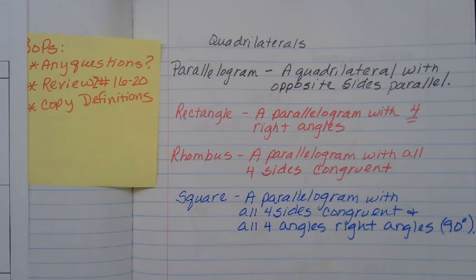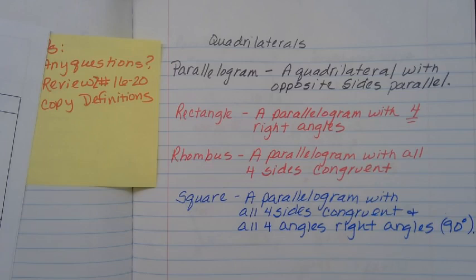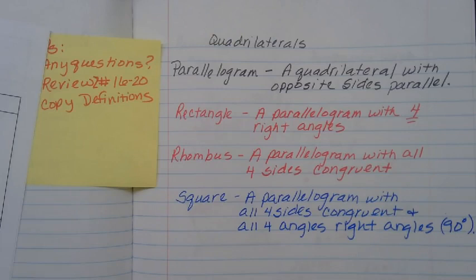And their definitions are all based on the fact that they are a parallelogram. So a rectangle is a parallelogram with four right angles, which means that everything that we learned on Wednesday about a parallelogram is also true for a rectangle. And then a rhombus is a parallelogram with all four sides congruent. So it doesn't have the angles congruent or right angles like a rectangle, but it does have all the properties of a parallelogram plus it has all sides congruent.